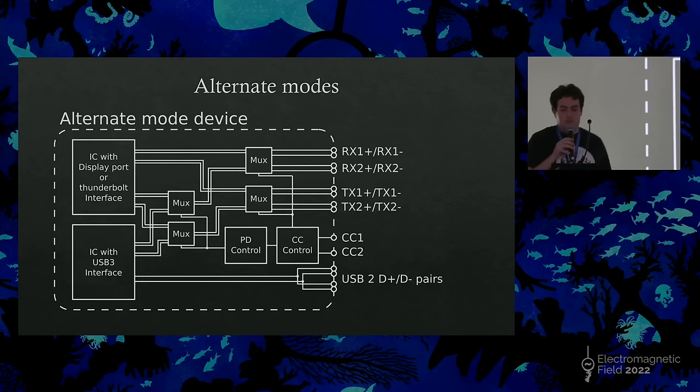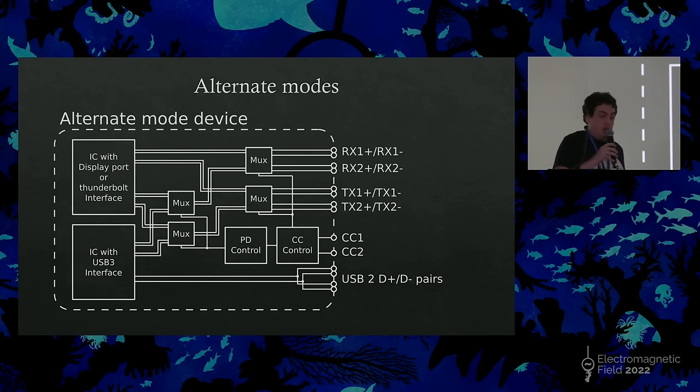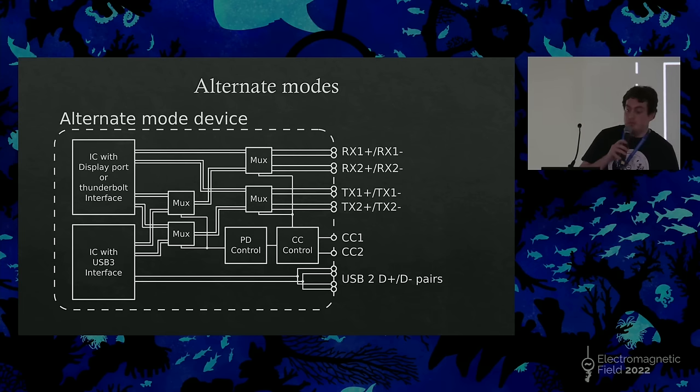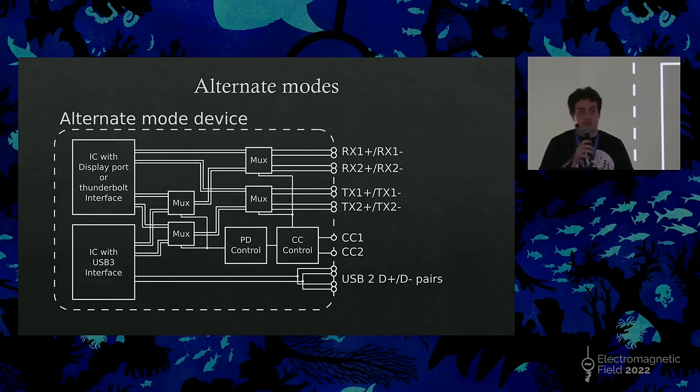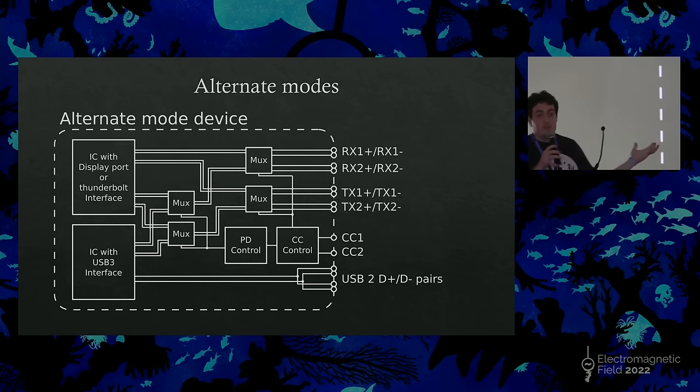So in terms of alternate modes, you've got the Thunderbolt, which will do PCI Express over those pins. There is DisplayPort, which even if you've got USB-C to HDMI, it's probably using DisplayPort and then converting, despite the fact there's another alternate mode for HDMI itself, but that's not been widely adopted. But equally, you can also just create your own custom docking protocol over it.